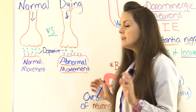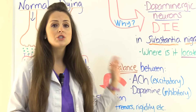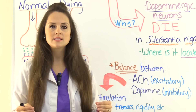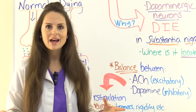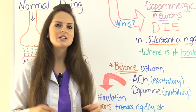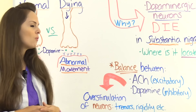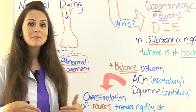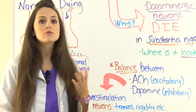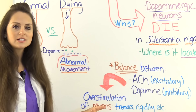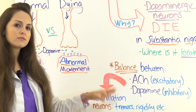Now let's talk about the relationship between acetylcholine and dopamine. In the nervous system there's always a balance between acetylcholine and dopamine. Acetylcholine is an excitatory neurotransmitter and it causes cholinergic activity. Dopamine, on the other hand, has inhibitory properties — it's an inhibitory neurotransmitter. In Parkinson's there's less dopamine at those receptor sites, which throws off the balance, so acetylcholine causes overstimulation of those neurons — and that's why you see signs and symptoms like tremors and rigidity.